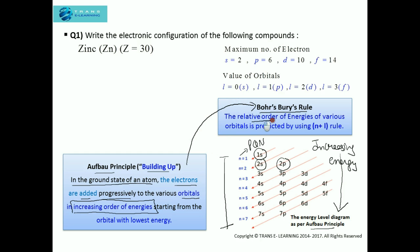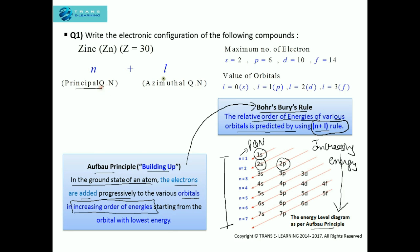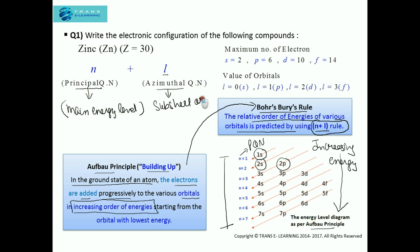The Bohr-Bury rule states that the relative order of energies of various orbitals is predicted by using the n plus l rule. This is the basis of the Aufbau principle. If we follow this n plus l rule, we need not remember the sequence of orbitals in increasing order — automatically and very easily we can write the electronic configuration of any element. Here, 'n' stands for principal quantum number and 'l' stands for the azimuthal or angular quantum number. The principal quantum number determines the main energy level, whereas the azimuthal quantum number determines the sub-shell or orbital in which the electron is present.